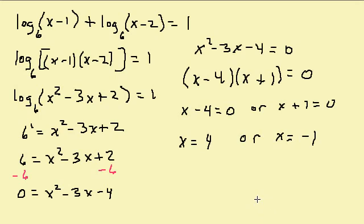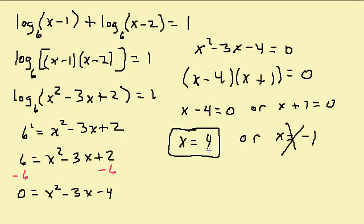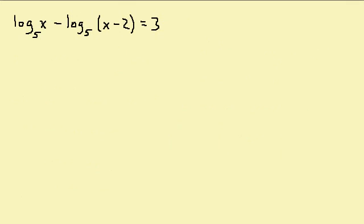Whenever we're solving logarithms, remember we cannot take the log of a negative number. If we plug in negative 1 for x, we get negative 1 minus 1 equals negative 2 — that would be the log of negative 2, which we can't do. So x equals negative 1 cannot be a solution. For x equals 4: 4 minus 1 is 3 (positive, okay) and 4 minus 2 is 2 (positive, okay). So our answer is x equals 4.